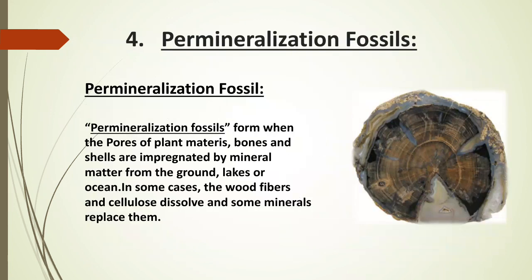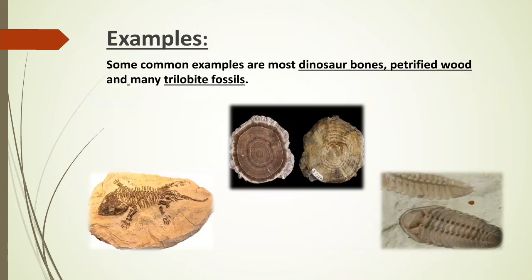Mineralization fossils: they form when the pores of plant material, bones, and shells are impregnated by mineral material from the ground, lakes, or ocean. In some cases, the wood fibers and cellulose dissolve and minerals replace them. Examples of this type of fossil include dinosaur bones and petrified wood.